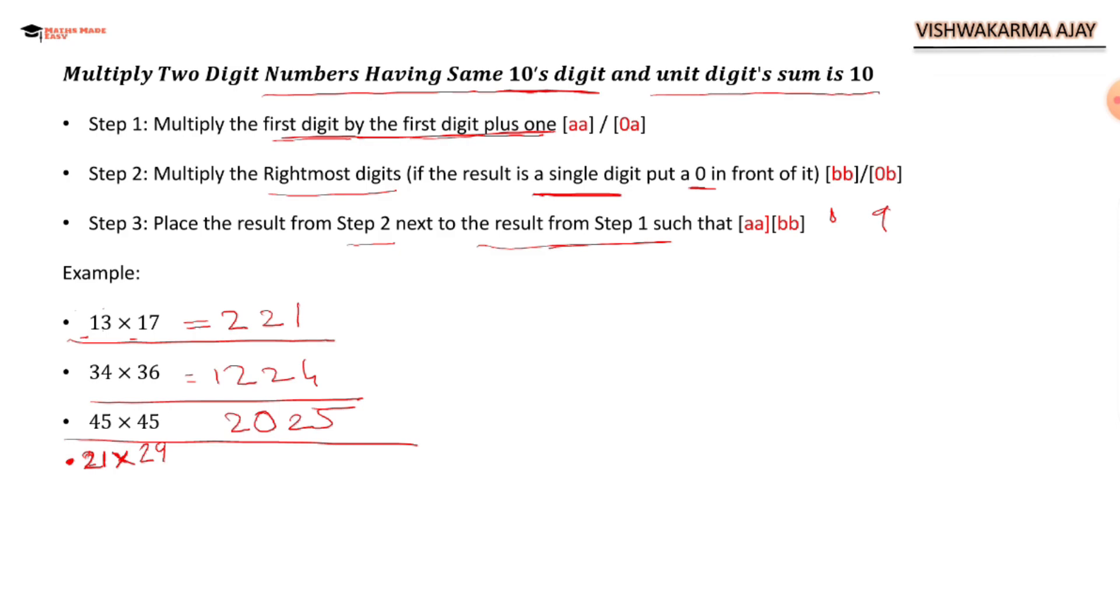Now I have taken another example, 21 times 29. 2 times the next number 3, so we have 2 times 3 is 6. 9 times 1 is 9. Now see this: if the result is a single digit, put 0 in front of it. So 609 is our answer.